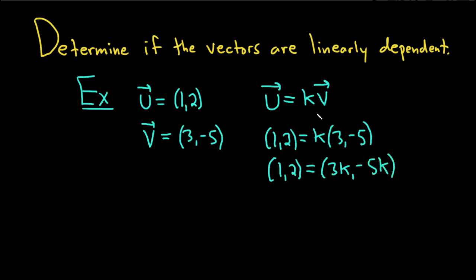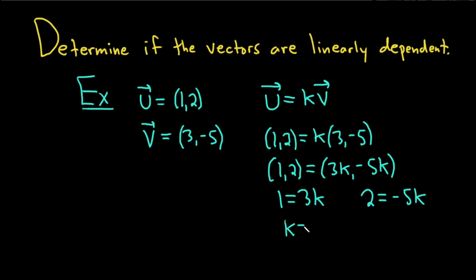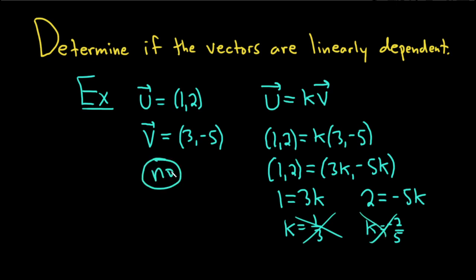We forced them to be multiples and distributed the k. Two vectors are equal when their components are the same, so this means 1 equals 3k, and also 2 equals negative 5k. Solving for k: dividing by 3 gives k equals 1/3; dividing by negative 5 gives k equals negative 2/5. These are not the same — this is impossible. So the answer is no, they are not linearly dependent; therefore they must be independent.